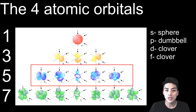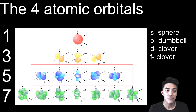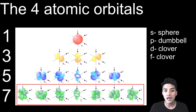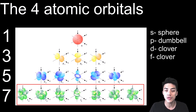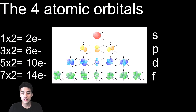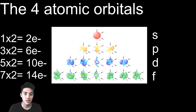A d-orbital is clover-shaped — like a four-leaf clover. There are five different types of d-orbitals because there are five different ways you can rotate these clovers around. Last of all, you have f-orbitals, which are also clover-shaped. They're a bit fancier than the d-orbitals, and there are seven different ways you can rotate them in three-dimensional space, so there are seven types of f-orbitals. Because each orbital can hold two electrons maximum, s can hold two, p can hold six, d can hold ten, and f can hold 14 electrons maximum.